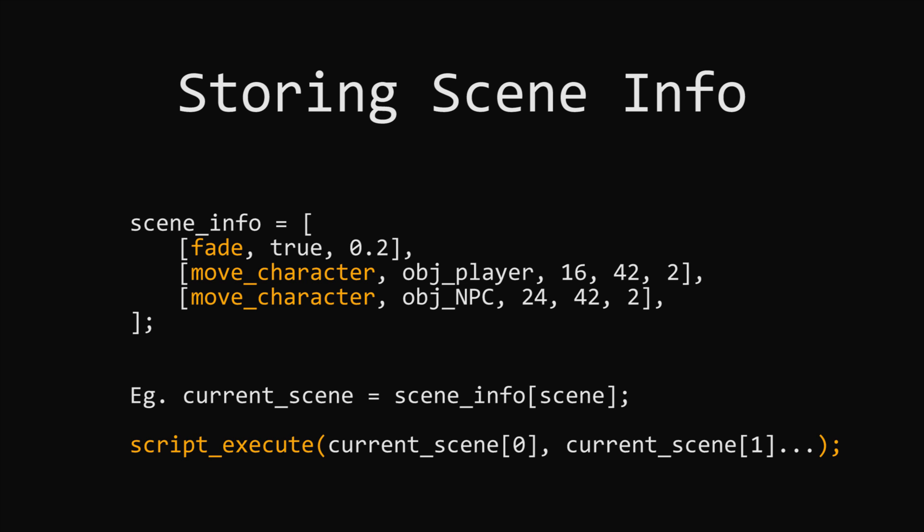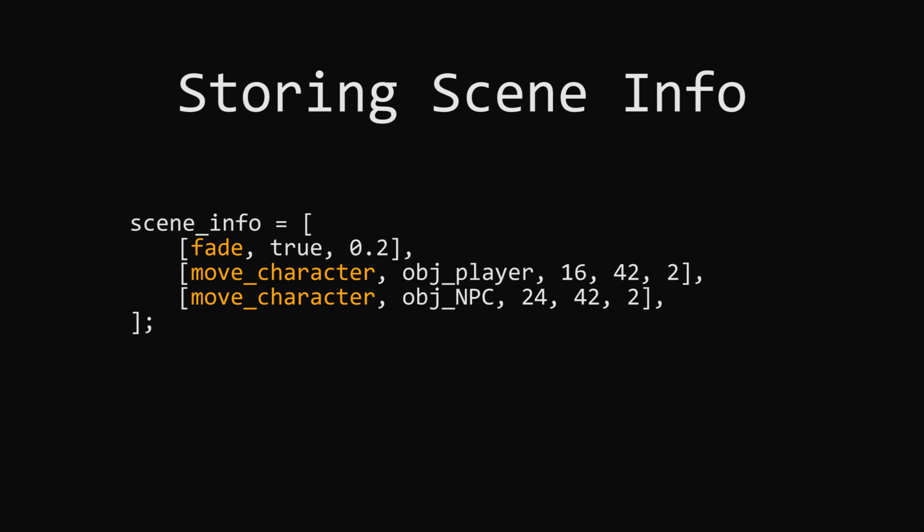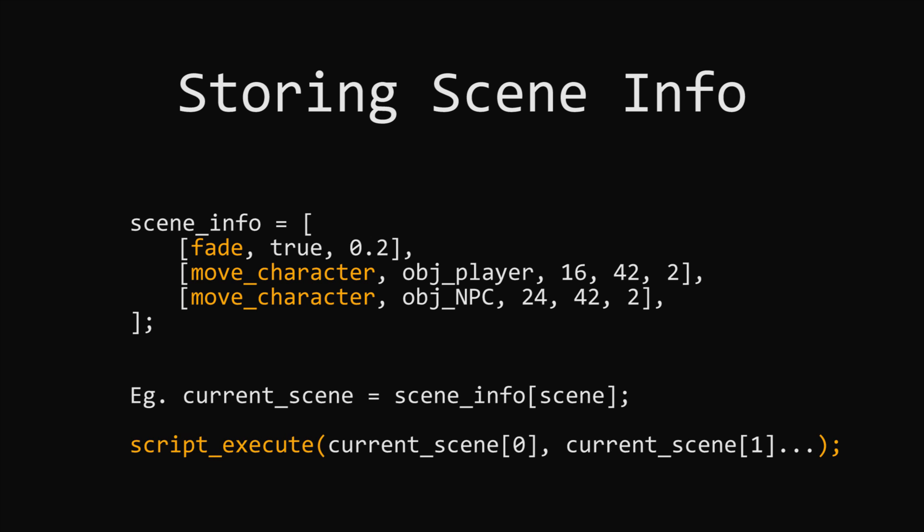This means that when it comes to actually writing what your scene is, you'll have your scene_info variable equal to one array, and then for each line you'll have the arrays of your scenes. I think this is quite an intuitive way to look at it, because you can see at a glance what your cutscene should be doing for all your different actions. This means we can just create one general cutscene object, and all we have to do is change the one variable scene_info — then the cutscene object will be able to take all this information and just run the cutscene, no matter how many scenes we give it.